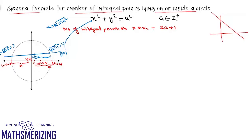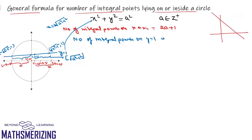The number of such points on the right-hand side is given by the floor function of √(a² - 1²), and there are equally as many on the left-hand side, plus one point on the y-axis. So the number of integral points on the line y = 1 is 2·⌊√(a² - 1²)⌋ + 1.